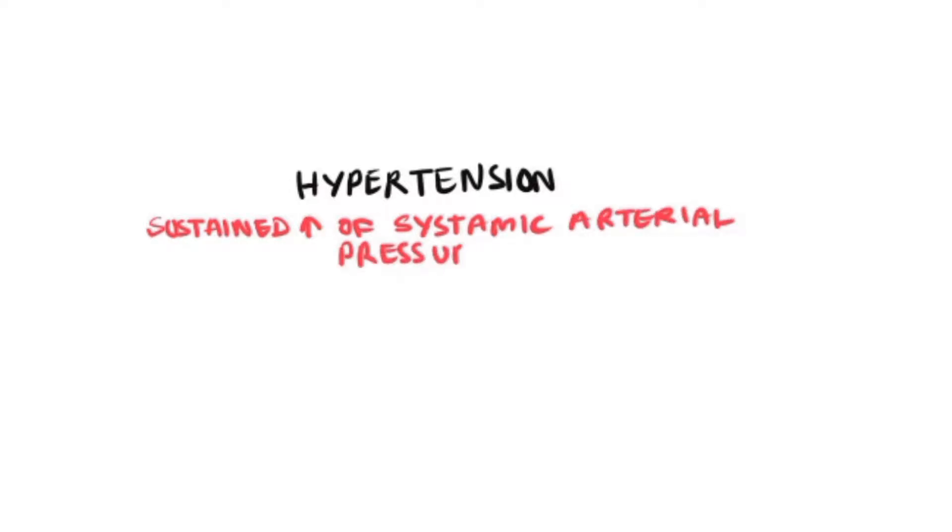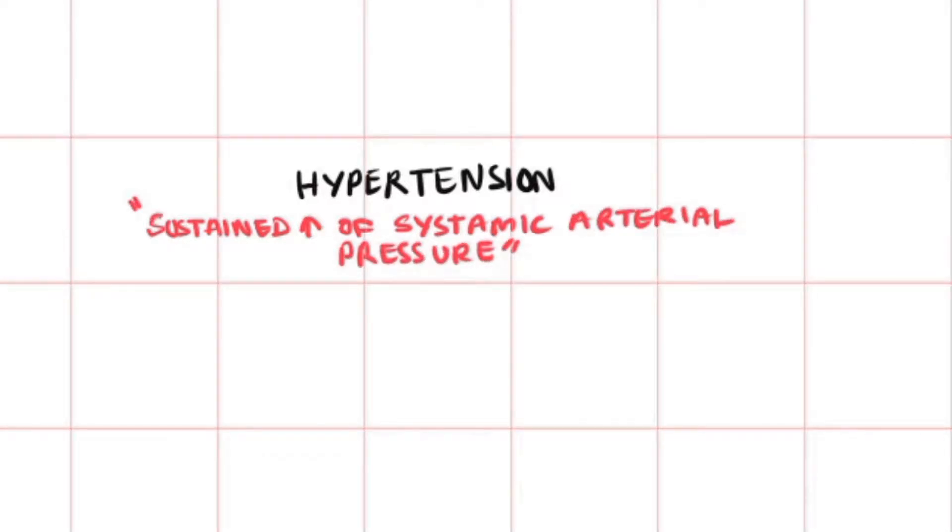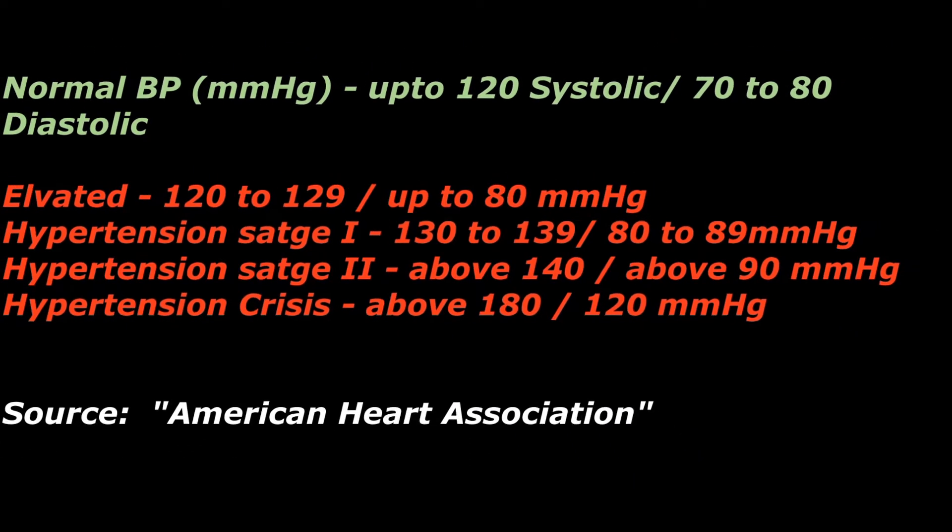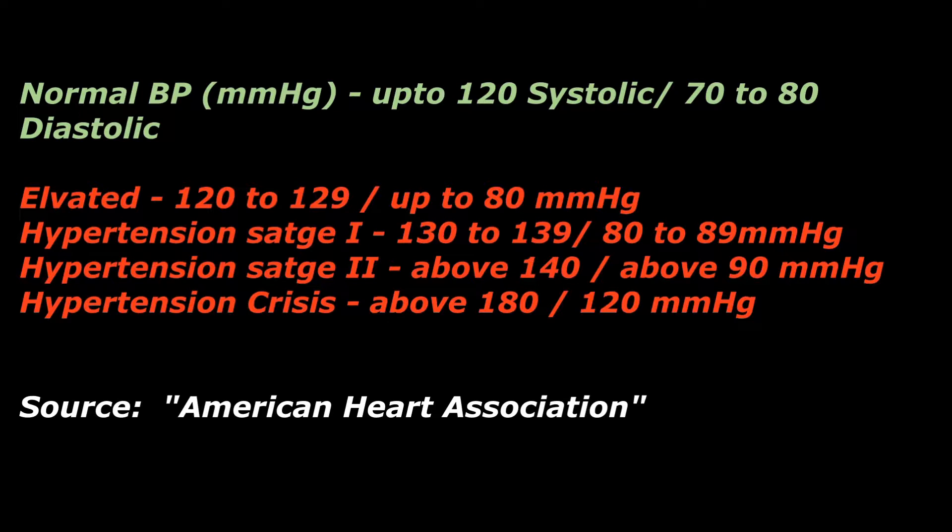Abnormal elevation of normal blood pressure is considered hypertension, defined as a sustained elevation of the systemic arterial pressure. Usually the normal BP and abnormal BP or elevated hypertension are shown out here.